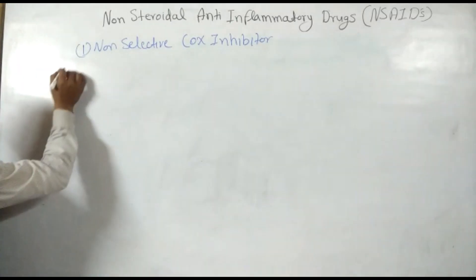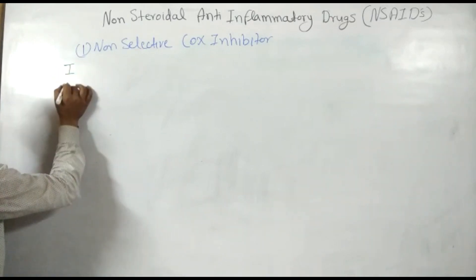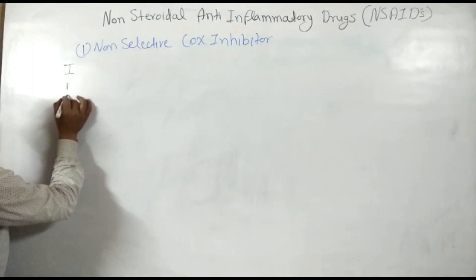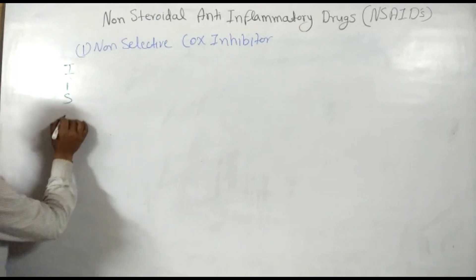Remember one word: I-P-S. These are the mnemonics by which you will remember all the subclasses of the non-selective COX inhibitor.